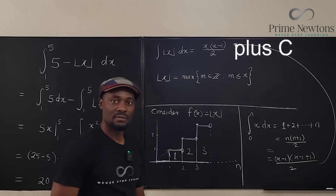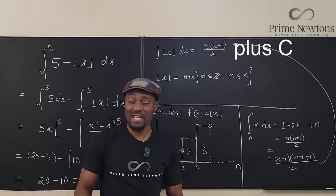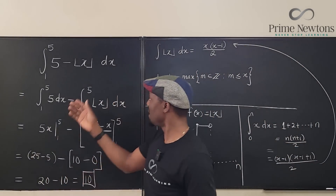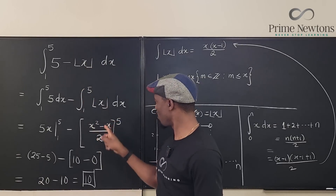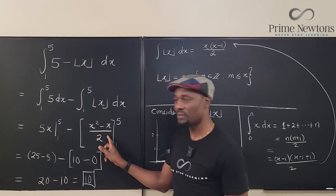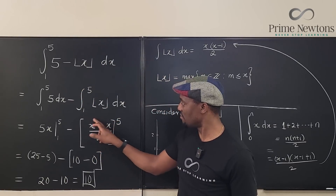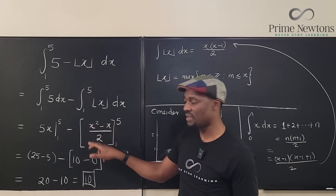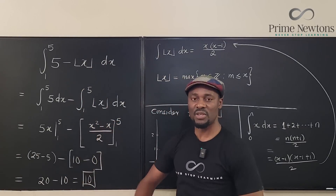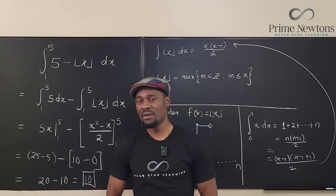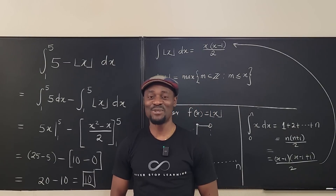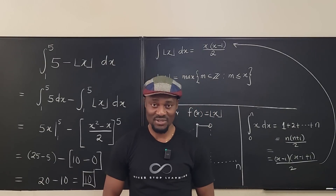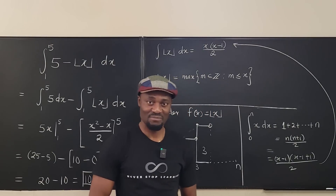Ultimately, whenever you see this linear floor function, recall that its integral is x squared minus x over 2. Just replace the floor function with that expression and evaluate as normal. Never stop learning — it doesn't stop learning, stop living. Bye-bye!